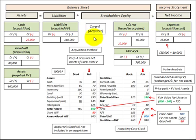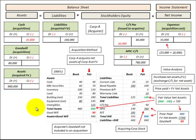Looking at the journal entries for this acquisition from the perspective of the acquirer, Corporation A: we debit goodwill for $80,000, and debit assets acquired at fair value for $860,000. Note that any existing goodwill of Corporation B would not be included in the acquisition. On the liabilities side, we credit liabilities assumed at $140,000.